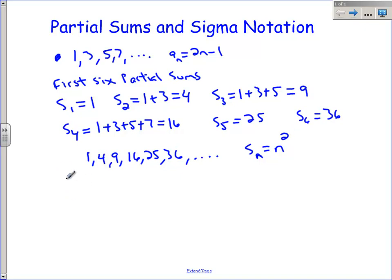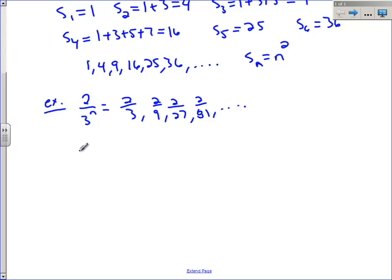Let's take another one, and instead of the first six partial sums, let's just go straight to the S sub n. What if we had a sequence, 2 over 3 to the n, which would be equal to 2 thirds, and then 2 ninths, and then 2 over 27, and 2 over 81. All of the denominators are powers of 3. Let's say we wanted to come up with the nth partial sum. Well, we need to come up with a pattern, so let's find some partial sums here.